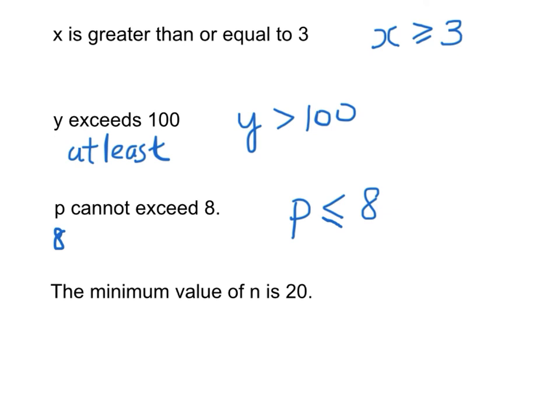The last one: the minimum value of n is 20. Minimum means n should be at least 20, therefore n ≥ 20.